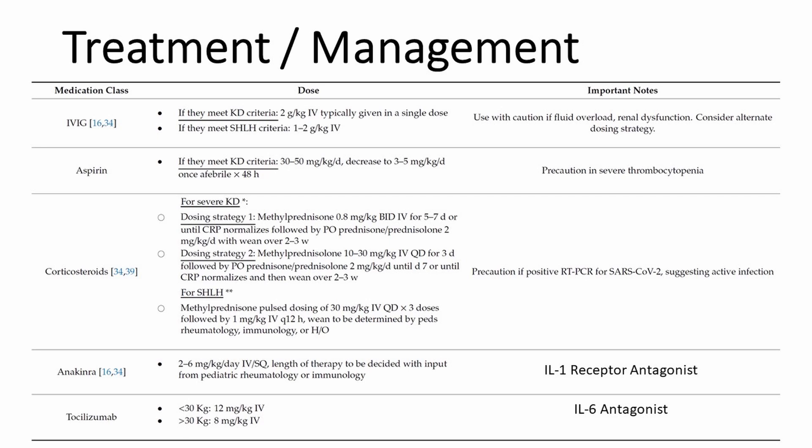IVIG is the first-line frontline treatment — used for Kawasaki disease, MIS-C, and many of these systemic inflammatory responses. All patients meeting criteria for Kawasaki should also receive aspirin therapy, so IVIG plus aspirin is well established. High-dose corticosteroids are another treatment indication for MIS-C. For refractory cases, potential therapies include anakinra, an IL-1 receptor antagonist, and tocilizumab, an IL-6 antagonist — based on the rationale of reducing the inflammatory cytokine storm.